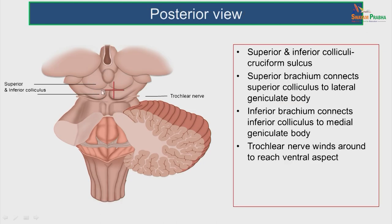On the posterior aspect, you can see two pairs of elevation — the superior colliculus and inferior colliculus — separated by a cruciform sulcus. The superior colliculus is connected to the lateral geniculate body through the superior brachium. The trochlear nerve winds around to reach the ventral aspect; it is the only cranial nerve which comes from the dorsal aspect of the brain.